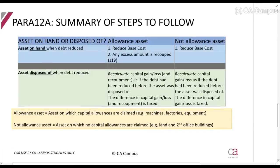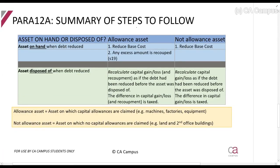Here are the steps to follow. You get two types of assets: an allowance asset and a non-allowance asset. An allowance asset is an asset which is subject to capital allowances, like machines, factories, and equipment. A non-allowance asset is one which is not subject to capital allowances, such as land and second-hand office buildings. To really understand allowances you also need to understand how to calculate recoupment, but at this part of the syllabus the process is the same for both situations.